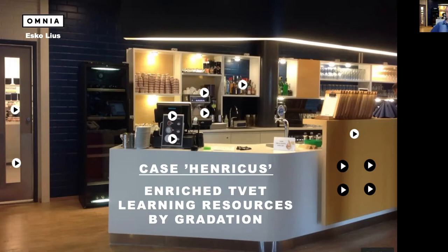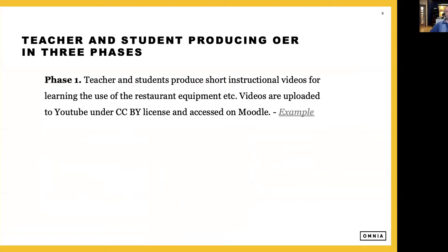This case comes from Omnia Finland. There are three steps in this case. The first phase was that the teacher wanted to get instructional videos for learning the use of restaurant equipment for her restaurant and catering students. Topics were chosen, small student teams were formed, and they wrote manuscripts for very short — about one to two minute — videos, and shot them with mobile devices, iPads, and their own mobile phones.